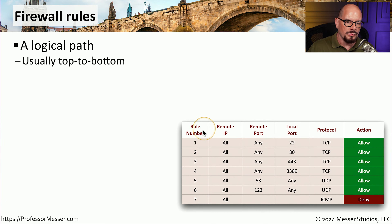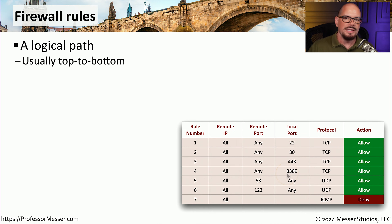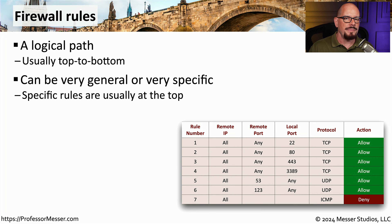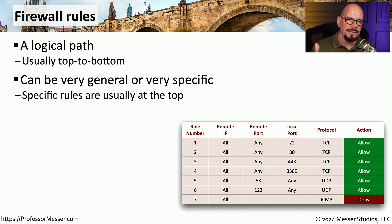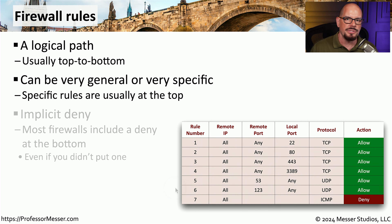Most firewall rules are interpreted by starting with the first rule number and working down through the list until it finds a match. This top-to-bottom approach is very common on most firewalls that you'll run into. This can be a very specific set of rules, or they may be very generalized. We tend to put the more specific rules at the top of this list, so they'll be matched first before it ever gets to the more general rules.